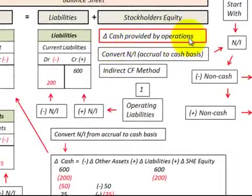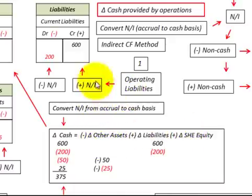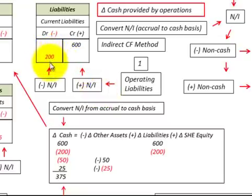Here we're converting net income from the accrual to the cash basis using the indirect cash flow method. Using our accounting equation — the change in cash equals minus the change in other assets, plus the change in liabilities, plus the change in stockholders' equity — let's look at our operating liabilities. If we had a credit or increase of $600, that would be recognized as a plus amount in our equation, equating to a $600 change in cash. If we had a reduction in current liabilities of $200, we show it as a minus amount, which converts to a minus amount in our change in cash.